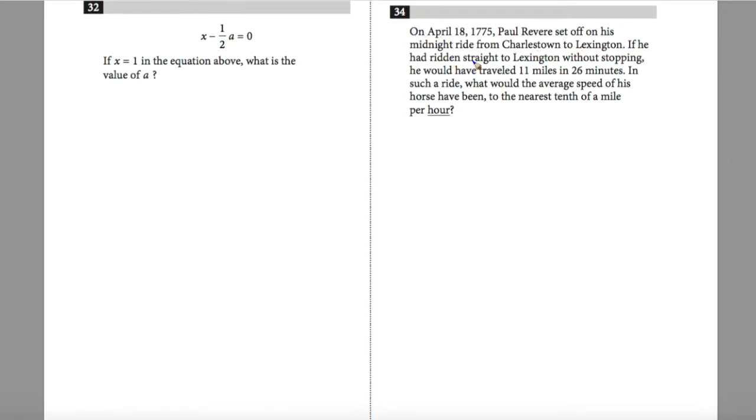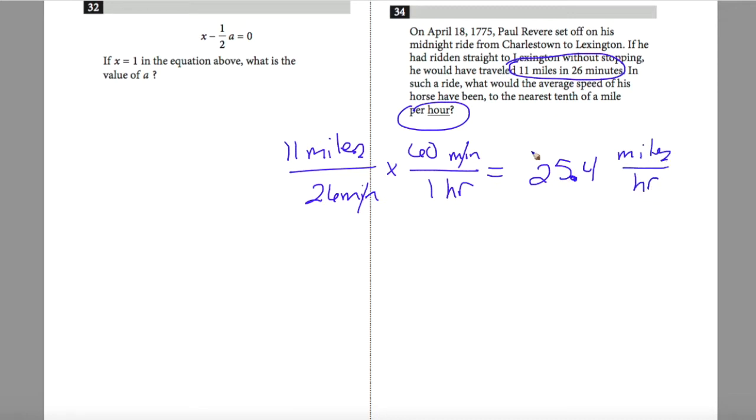Question 34, if he had ridden straight to Lexington without stopping, he would have traveled 11 miles in 26 minutes. In such a ride, what would the average speed of his horse have been to the nearest tenth mile per hour? So I'm taking 11 miles over 26 minutes, and I'm attempting to convert this to miles per hour. I'm going to take 11 times 60 divided by 26, and this will end up giving me 25.4 miles per hour.